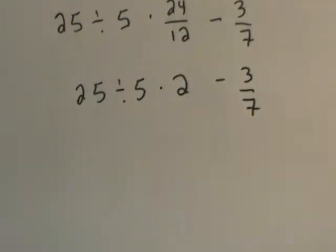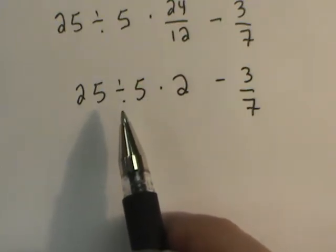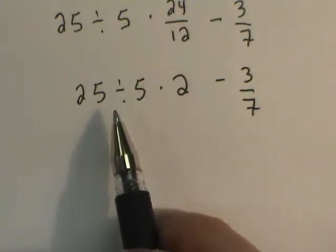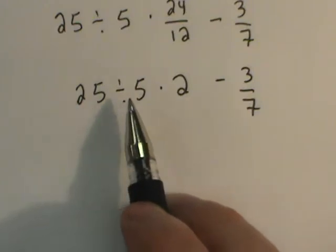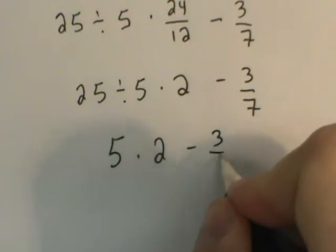The next step, we want to just follow through here. Remember, multiplication and division are an equal playing field. So you want to do whoever comes first in the problem. 25 divided by 5 is 5 times 2 minus 3 sevenths.